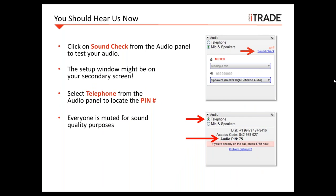Your sound quality should be good. You can always check by clicking on the sound check link in the audio panel of your GoToWebinar toolbar. This setup window may be on your secondary screen if you're using two monitors. Everyone will be muted for sound quality purposes. If you're experiencing any issues with computer audio, you can switch over to the telephone using the conference number and access code on your GoToWebinar toolbar.